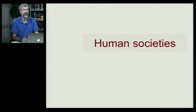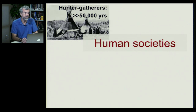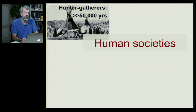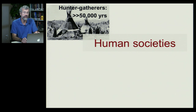Human societies have certain typical patterns. The earliest would have been these hunter-gatherers — groups of maybe 30 to 50 people that stayed together and moved around together. Even in North America we see this with the Native Americans, moving up and down the plains looking for resources through the seasons.